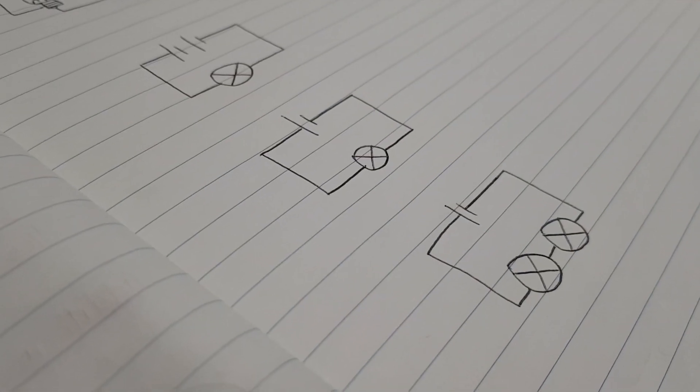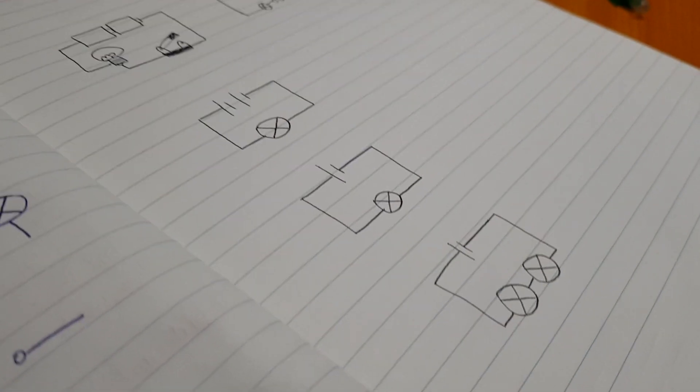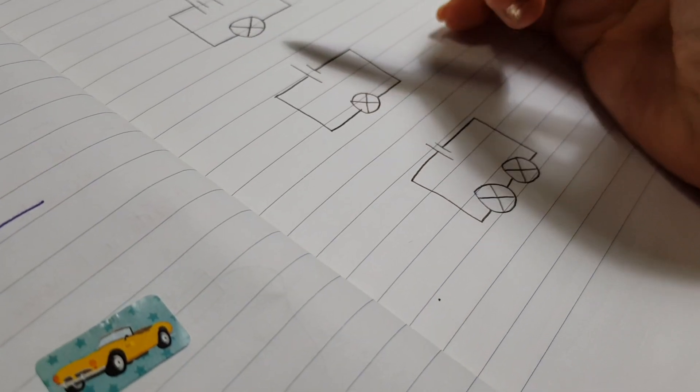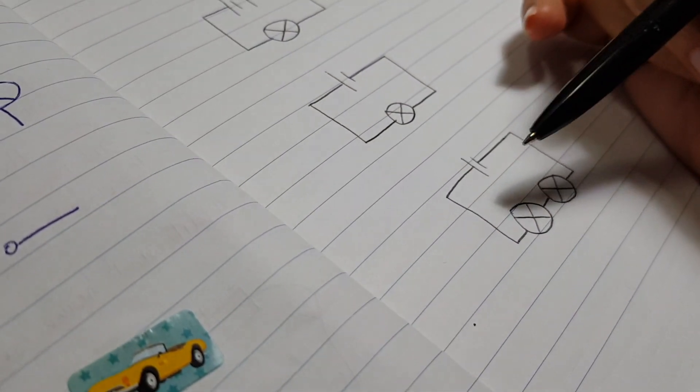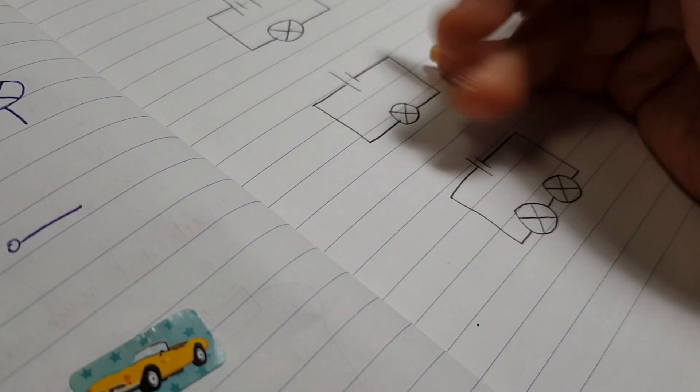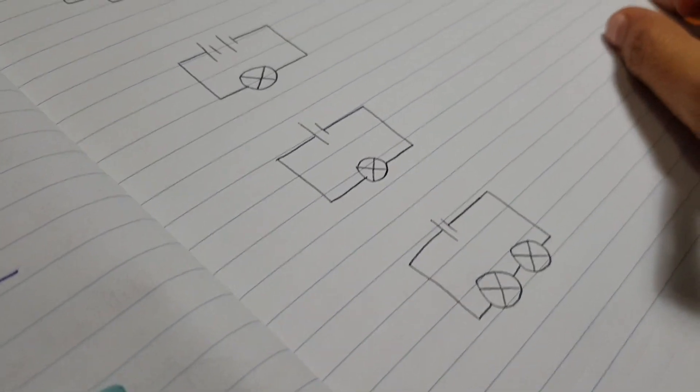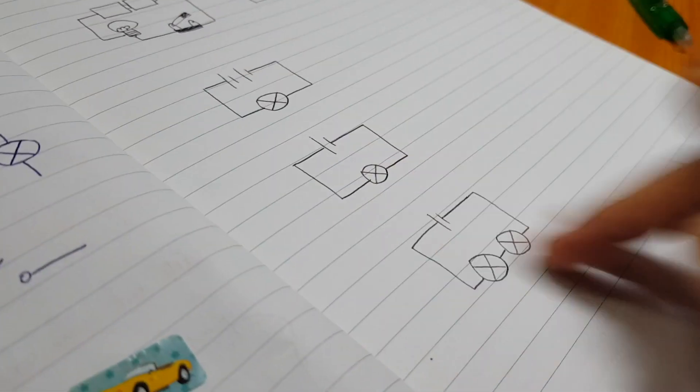In using electricity, you also learn about how when there are different numbers of batteries and different numbers of bulbs in series, it affects the brightness of the light bulb. So first from here, do you know which one is the brightest?